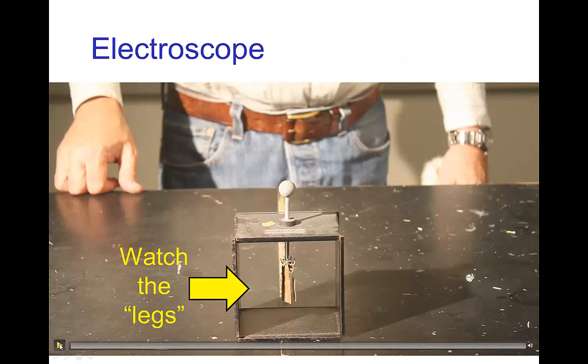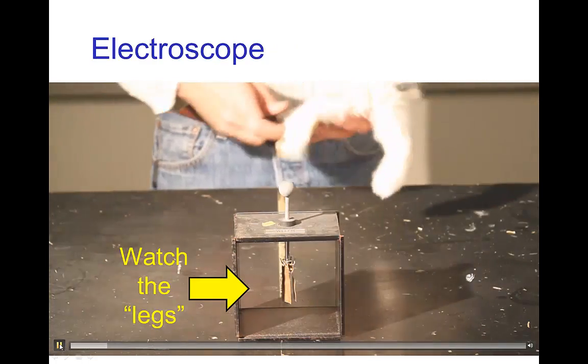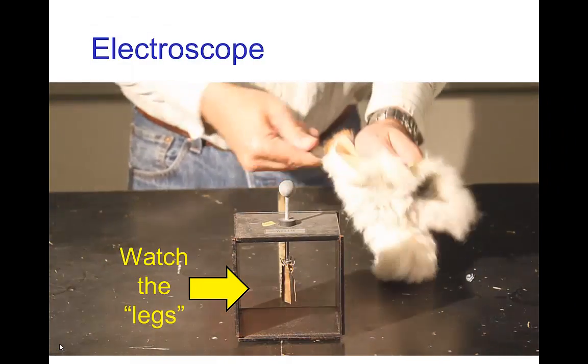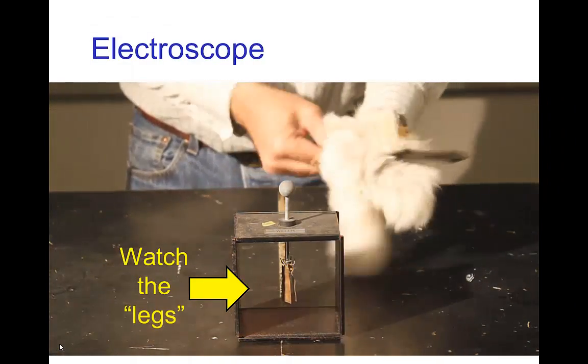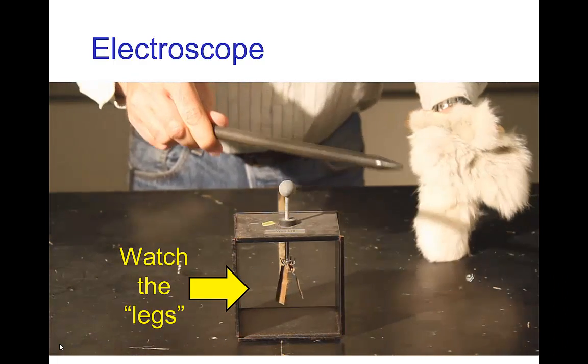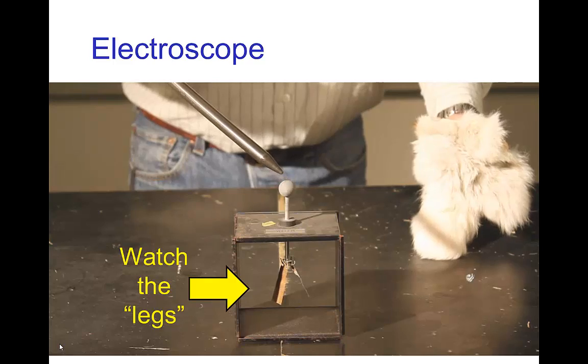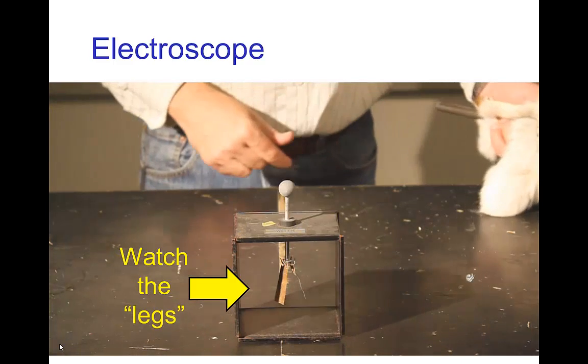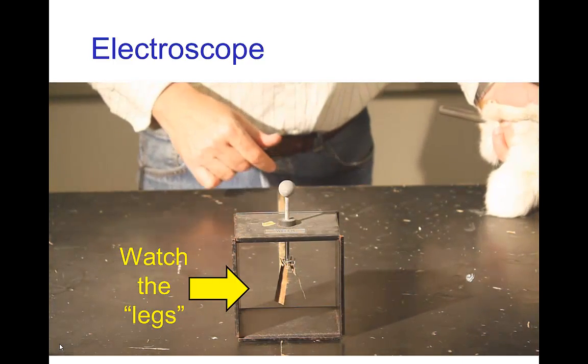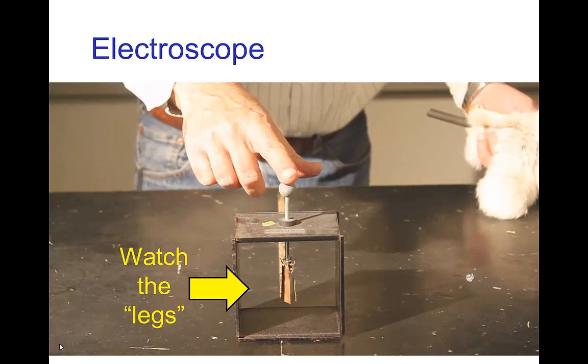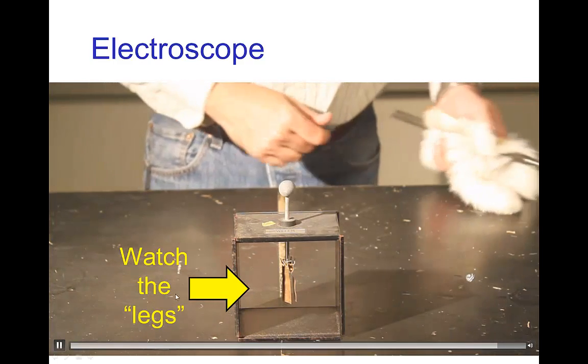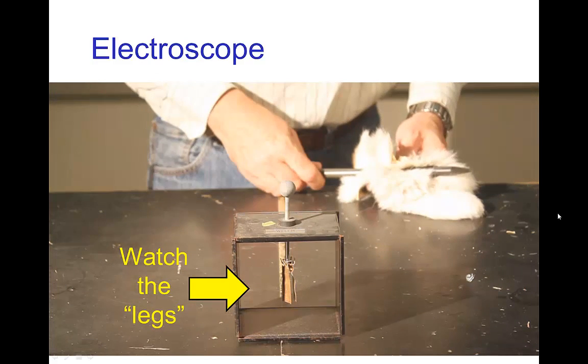Now, let's look at a little demonstration. So I have a rubber rod, I rub it with some fur, and then I'm going to detect the charge by dumping the charge that I just put on the rod on that electroscope. Now, I touch it and I have now discharged it.